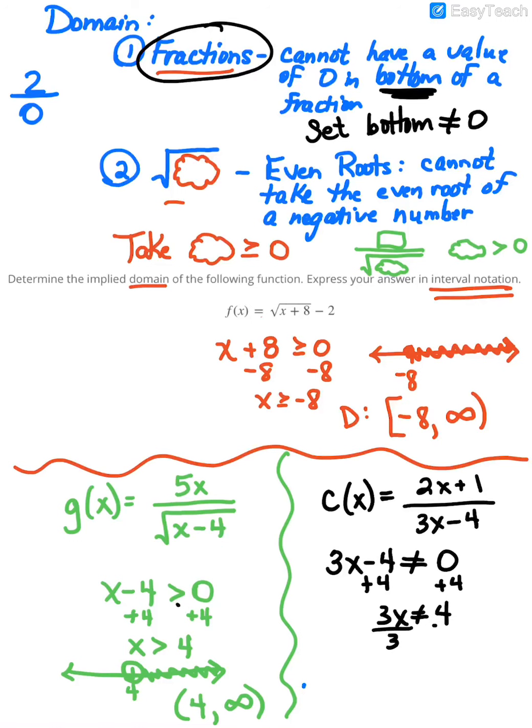Divide both sides by 3, and I'm getting x cannot equal 4 thirds. Now if you think of this graph, what I'm saying is at 4 thirds there's a big hole in the graph. X could be anything smaller, x could be anything bigger, it just cannot equal 4 thirds.